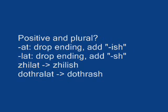If your verb is plural and positive, for AT verbs you drop the ending and add -ISH at the end. So zilat would become kisha zilish. For LAT verbs, you drop the ending and add -SH at the end. So dothralat would become kisha dothrash.